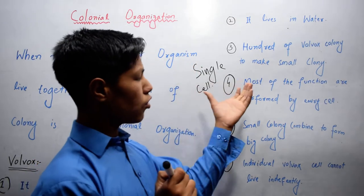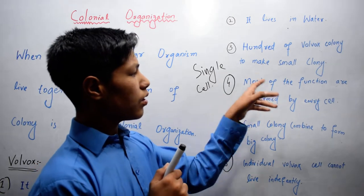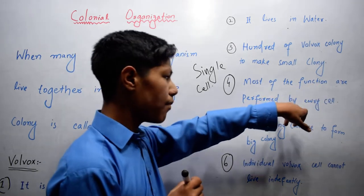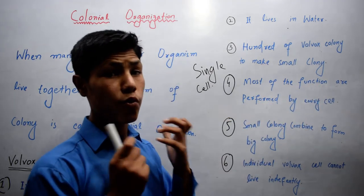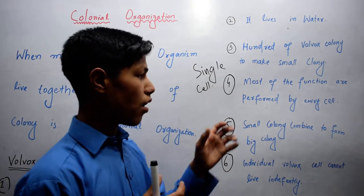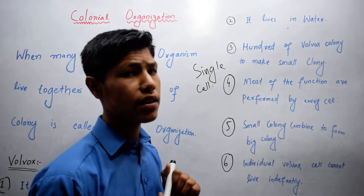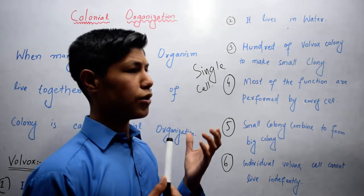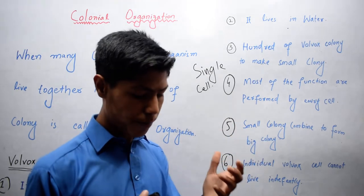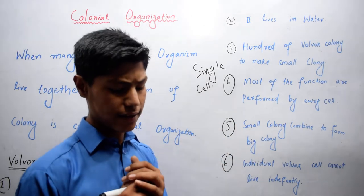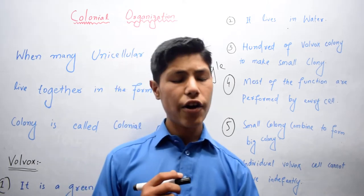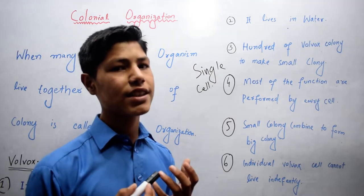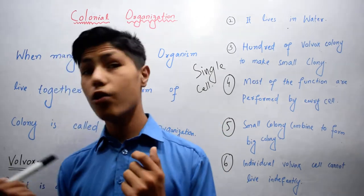Fourth, most of the functions are performed by each cell. In Volvox, most of the functions are performed by each cell. For example, mobility is the function of vegetative cell, while reproduction is the function of reproductive cell.